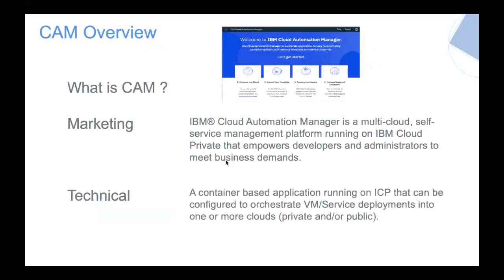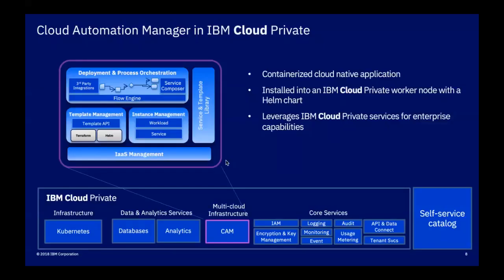So what is CAM? The marketing says it's a multi-cloud self-service platform running on IBM Cloud that empowers developers and administrators to run the business. What it really means is it allows you to have a single point of control for multi-cloud management across your cloud estate. It is ICP-based — this is key to remember. It's actually a set of containers and pods that run within ICP and can connect to multiple clouds across your environment, whether public or private. ICP is ideal for CAM because CAM — if you remember IBM Cloud Orchestrator a couple of years ago, it was quite complex to install and deliver. Because of how ICP works, it's able to break CAM out into microservices, and you'll see how many different types of microservices there are within CAM and how ICP delivers those.